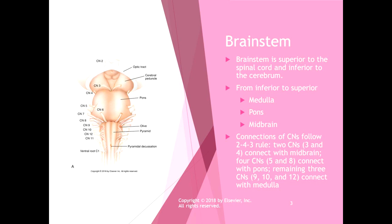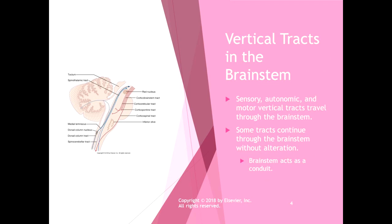A way to remember the cranial nerve connections is the two-four-three rule: two cranial nerves connect with the midbrain, four connect with the pons, and three connect with the medulla. You don't have to memorize this, but it's a useful reference.